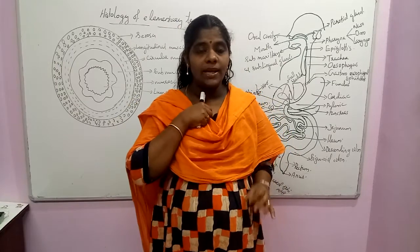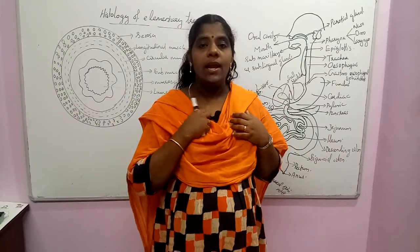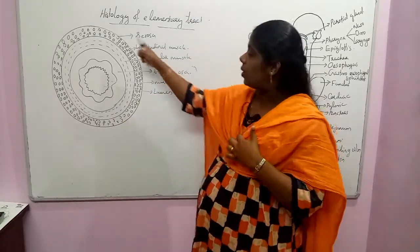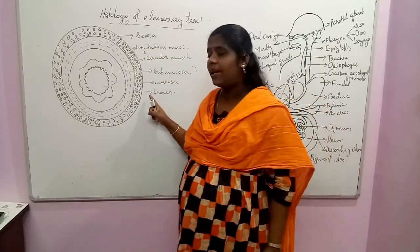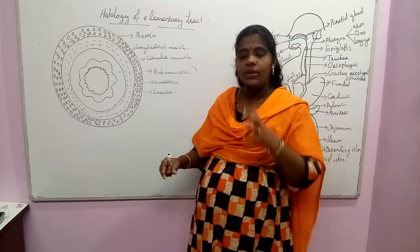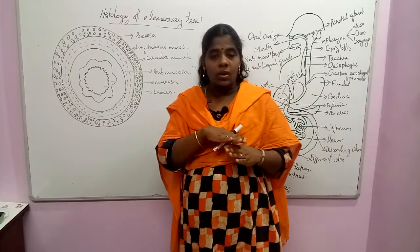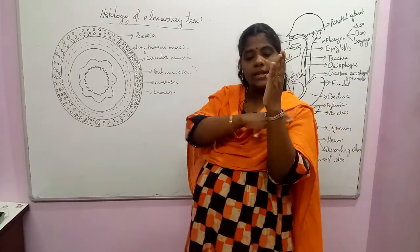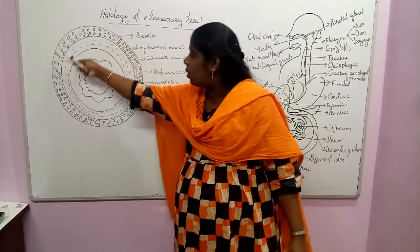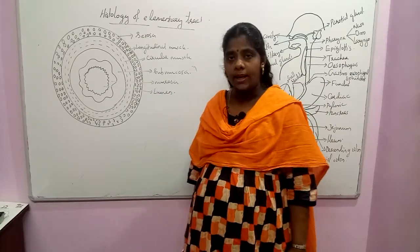The alimentary tract is a tube, and the tissues are not the same throughout. I have drawn the picture of the cross-section of this alimentary tract, which has different layers of tissues.